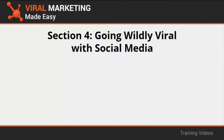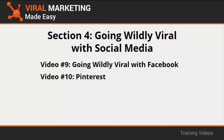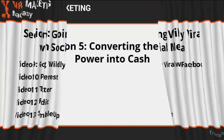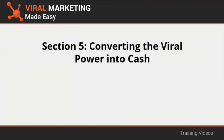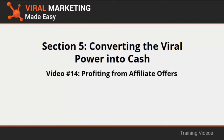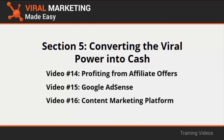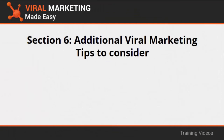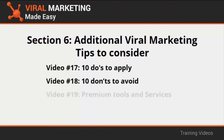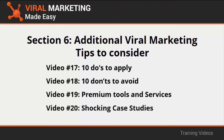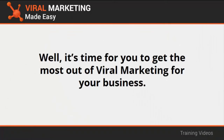Section 4 covers going wildly viral with social media in videos 9 through 13, including Facebook, Pinterest, Twitter, Reddit, and StumbleUpon. Section 5 covers converting viral power into cash in videos 14 through 16, profiting from affiliate offers, Google AdSense, and content marketing platforms. Section 6 covers additional viral marketing tips in videos 17 through 20, including 10 do's, 10 don'ts, premium tools, and shocking case studies.